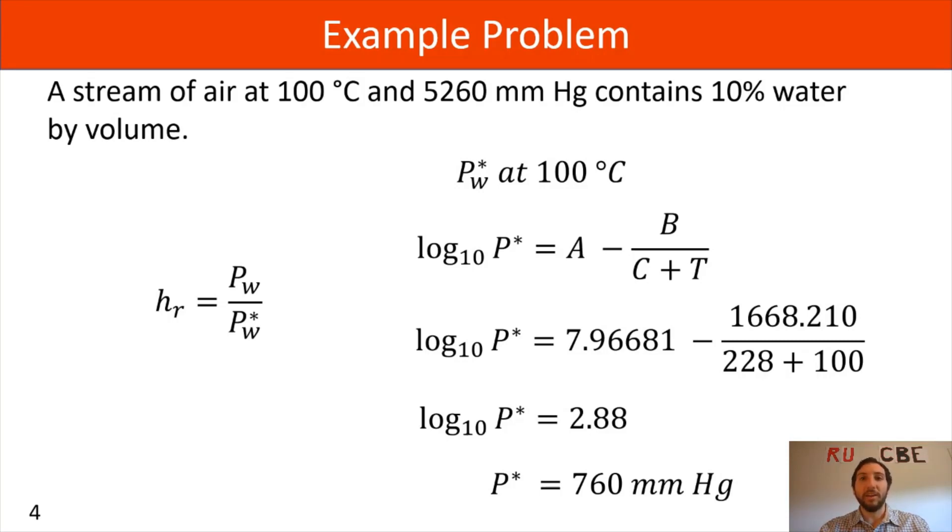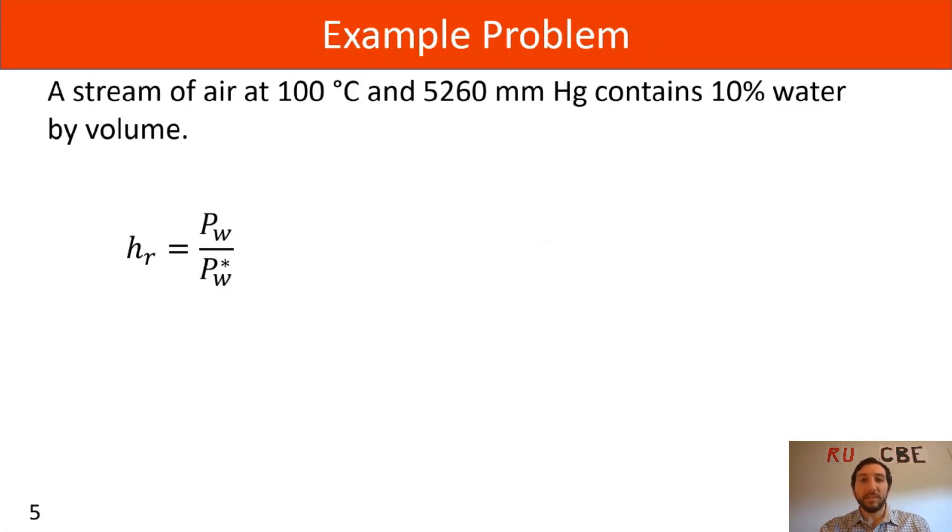We still need to work on our Pw. For Pw, we're going to use Dalton's law where Pw equals yw times P total. We know the mole fraction of water is 10 percent because we can apply Amagat's law where 10 percent water taking up volume indicates that 10 percent of the moles are water. So Pw equals 0.1 times our total pressure 5260 millimeters of mercury, giving us Pw equal to 526 millimeters of mercury.